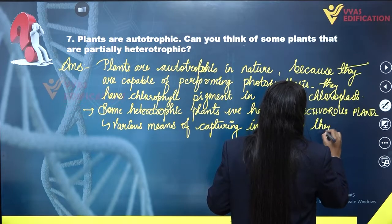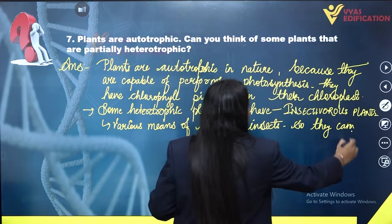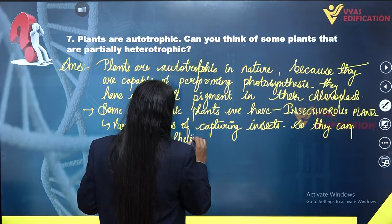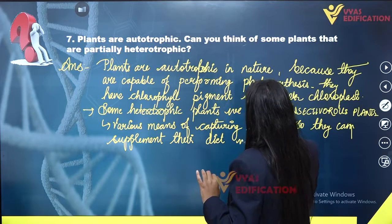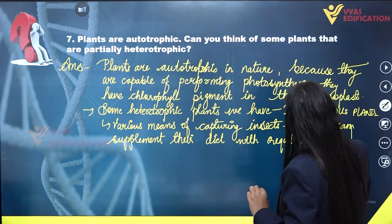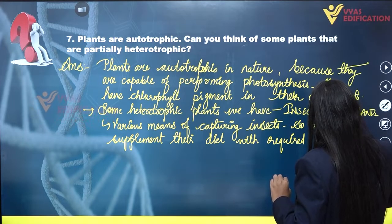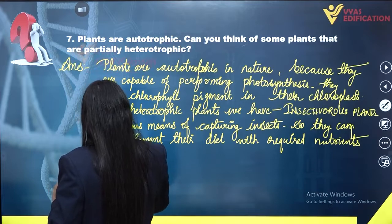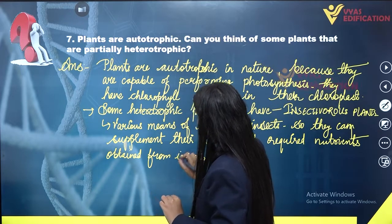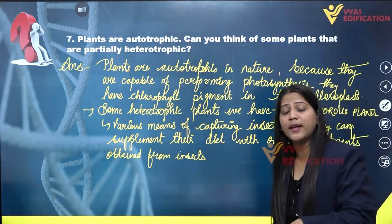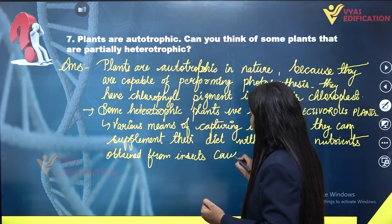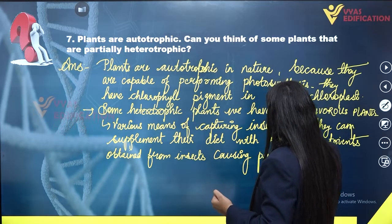They capture insects so they can supplement their diet with the required nutrients obtained from insects, causing proliferation in their growth.